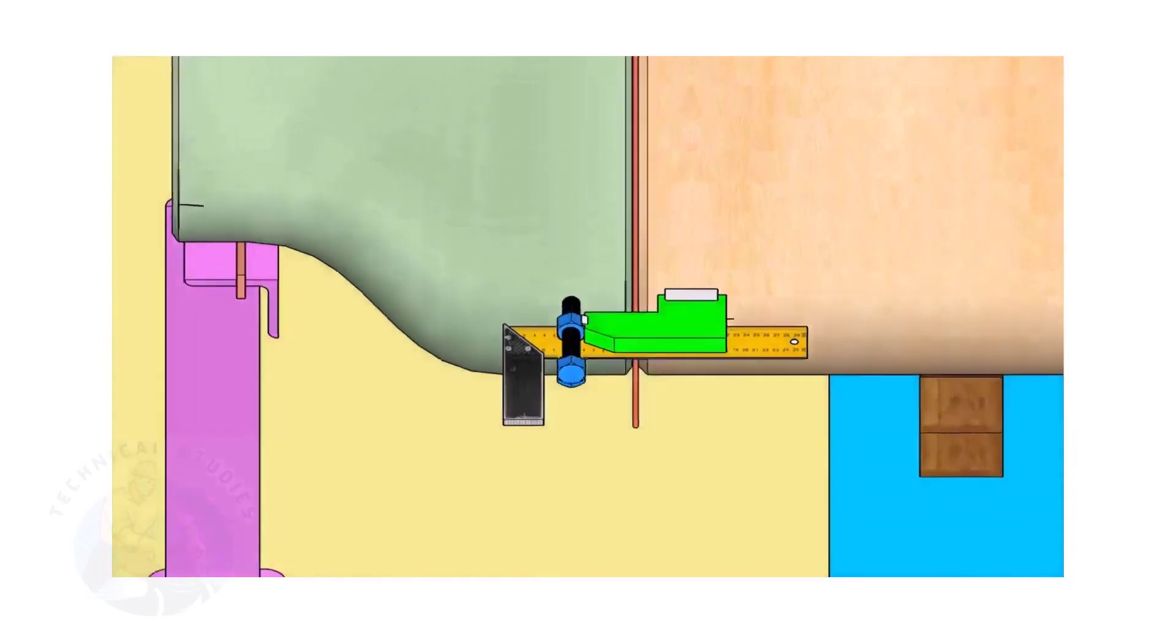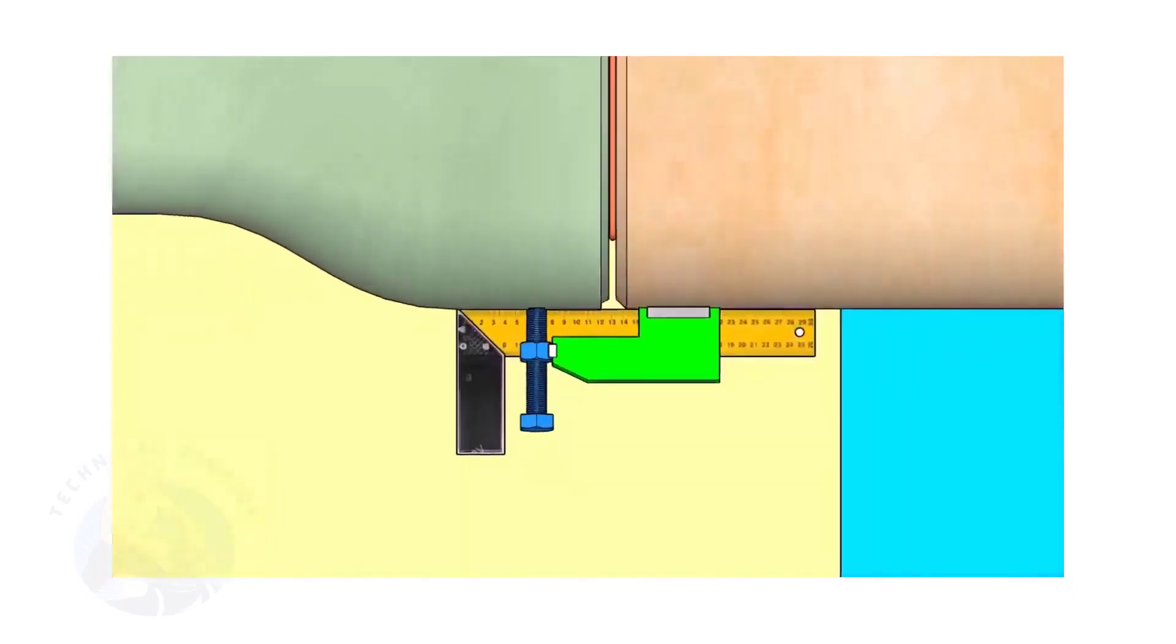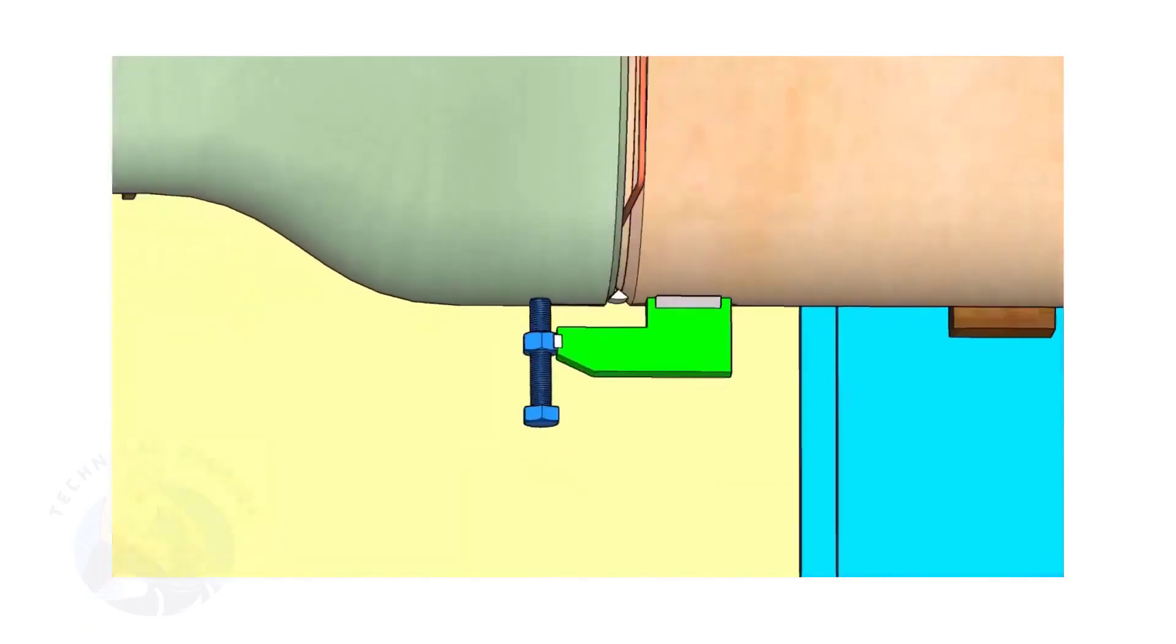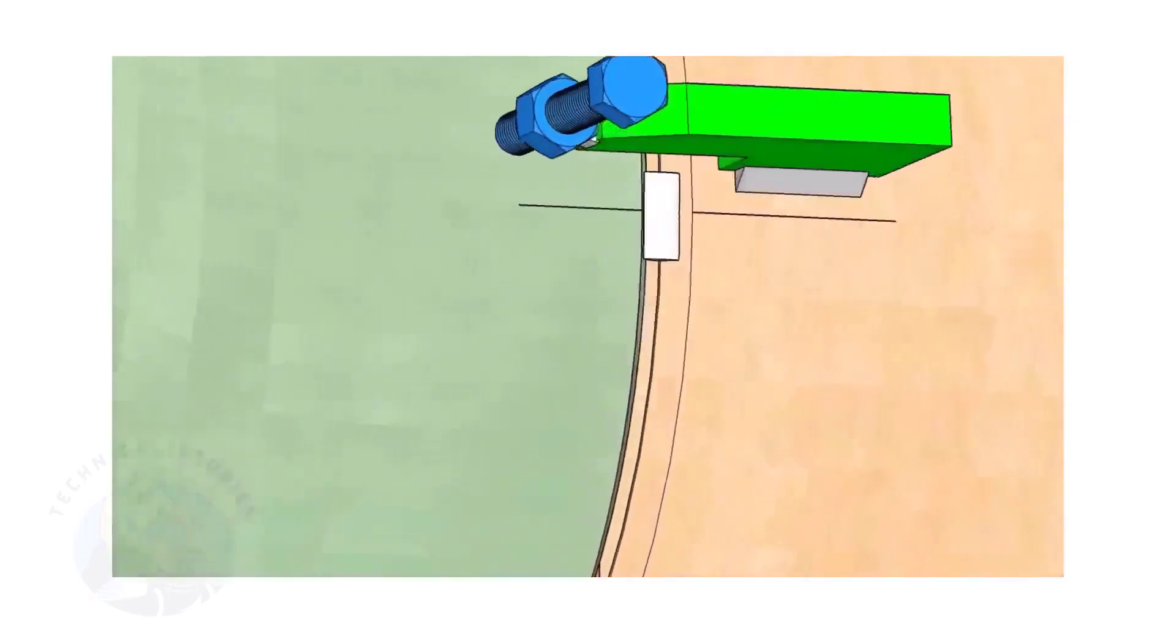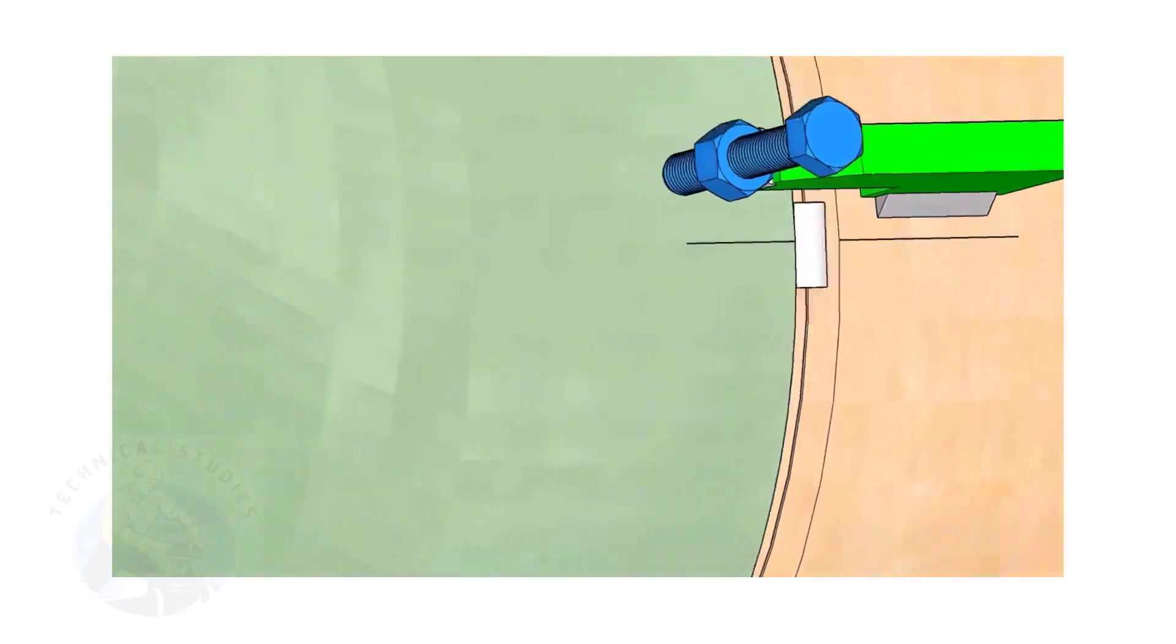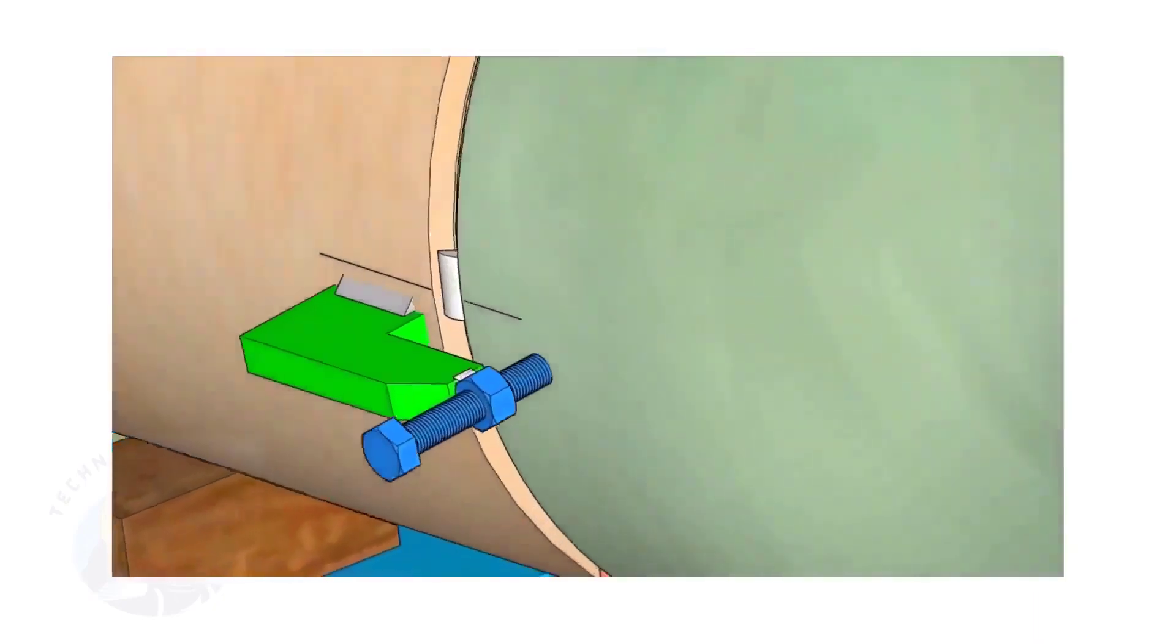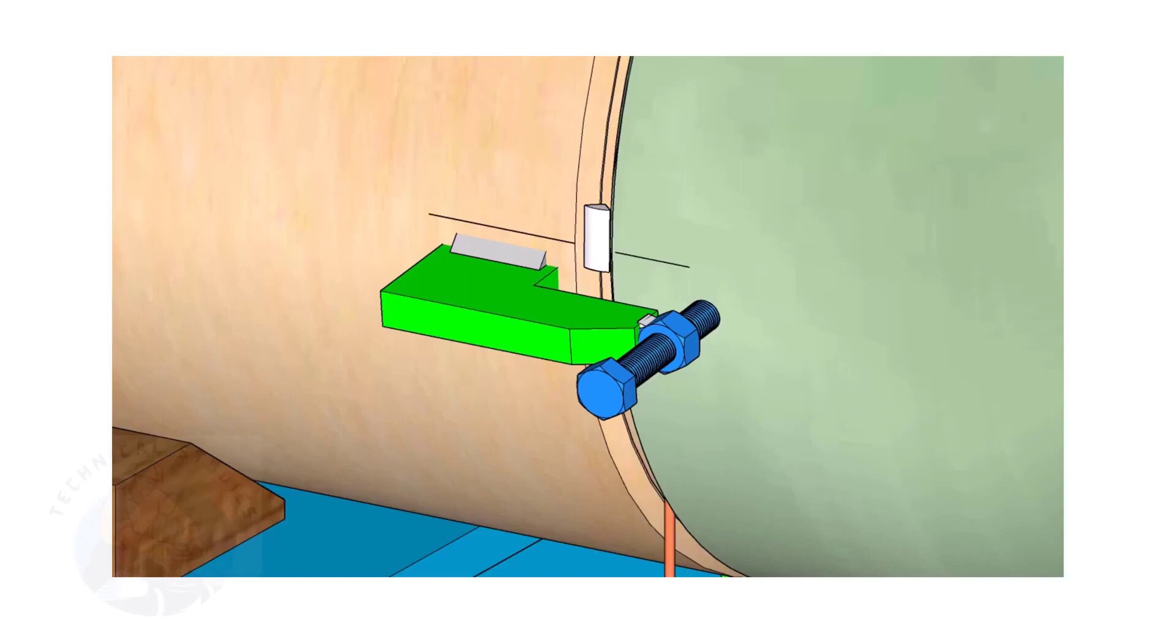Correct the straightness of the joint on both sides. If required, remove the gap rod. Tack weld on both sides. Thank you for watching.